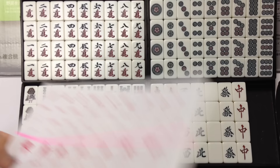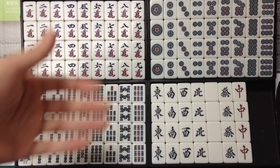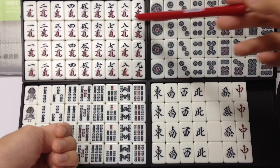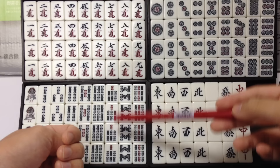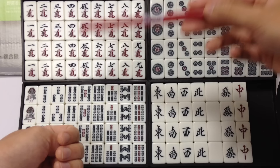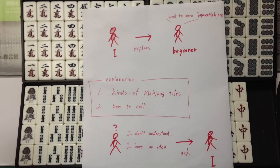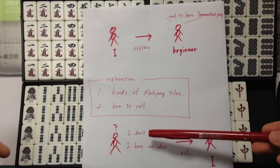Mahjong tiles are four kinds: Manzu or Wanzu, Pinzu, Sozu, Jihai. Nine kinds, each four, total 36, 36, 36, 28 — total 136. If you don't understand, please ask me.